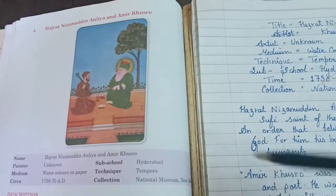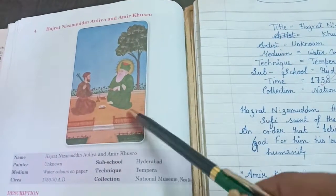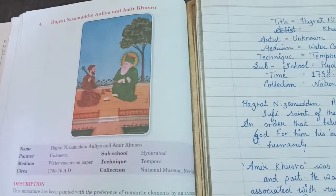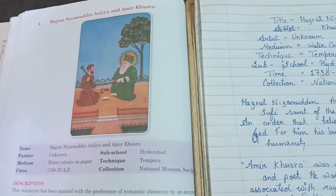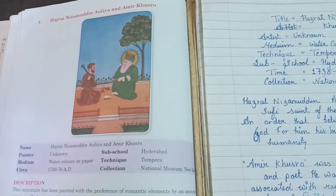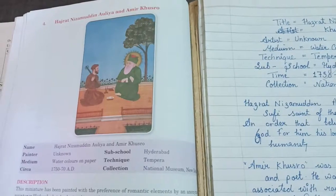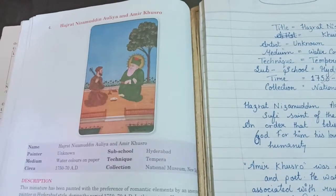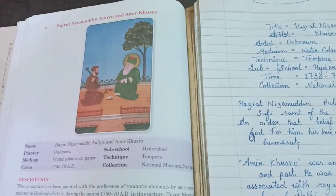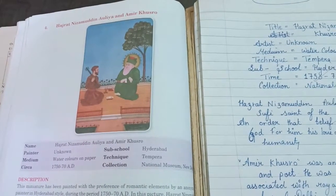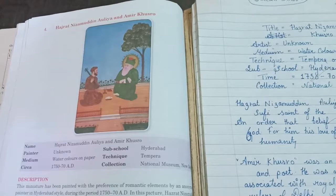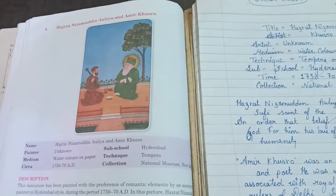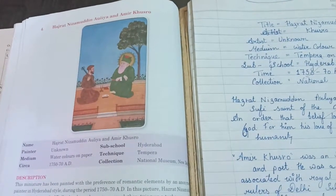First of all, we need to know that Hazrat Nizamuddin Aulia and Amir Khushro are historical figures. Hazrat Nizamuddin Aulia was a famous Sufi saint who helped the Chishti order in India. This order believes love is a means of realizing God — for him, love of God implies the love of humanity.